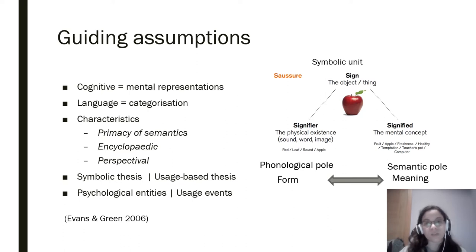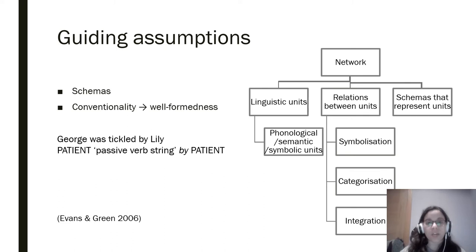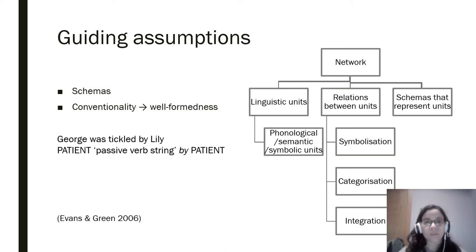The root is a usage event — a situation of language use. If knowledge of a language is semantic, then there is an inventory of symbolic units that conform a language. We have on the one hand linguistic units, such as 'apple.' On the other hand, relationships between these units, and schemas. Schemas are grammatical forms such as the passive, independent of the specific words that fit the construction.